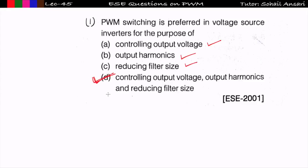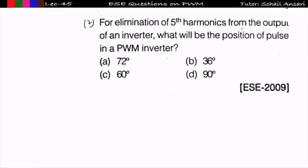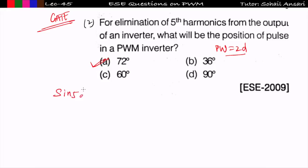The next question: for the elimination of the fifth harmonic from the output of the inverter, what will be the position of the pulse in the PWM inverter — meaning the pulse width equal to 2d? This was also asked in the GATE exam. To remove the fifth harmonic, we set sin(5d) = 0, giving d = π/5 = 36 degrees. So pulse width = 2d = 72 degrees.